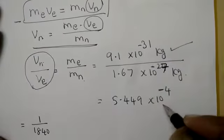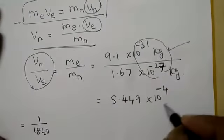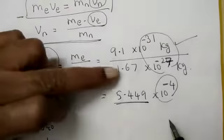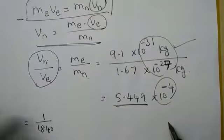Mass of electron is equal to 9.1 into 10 to the power minus 31 kilogram. Mass of neutron is equal to 1.67 into 10 to the power minus 27 kilogram. Now this is on simplification. That is, 10 to the power, this one on simplifying, 10 to the power minus 4. This one, 9 divided by 1.67, you are getting 5.4. So exact division, you are having the value of 5.449